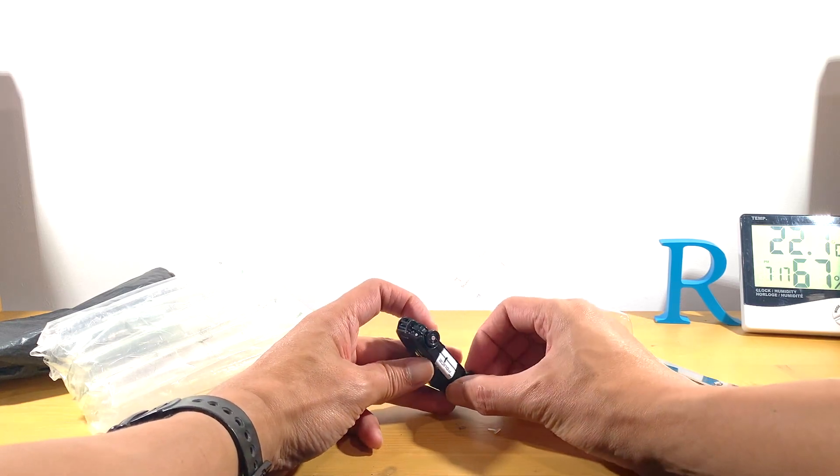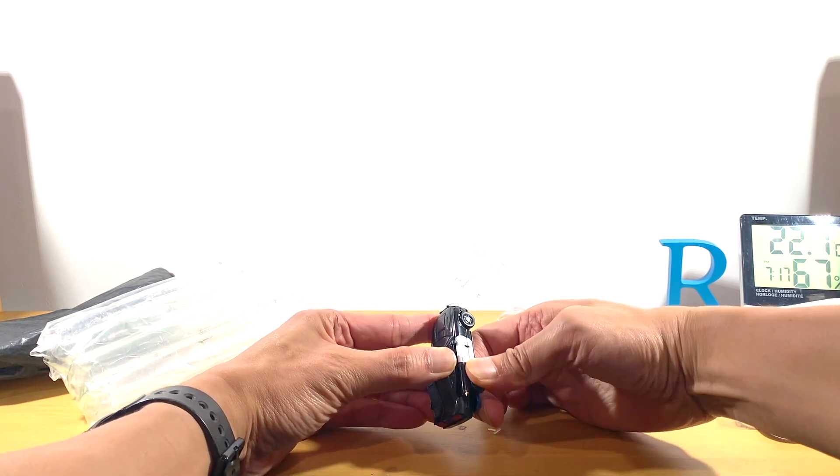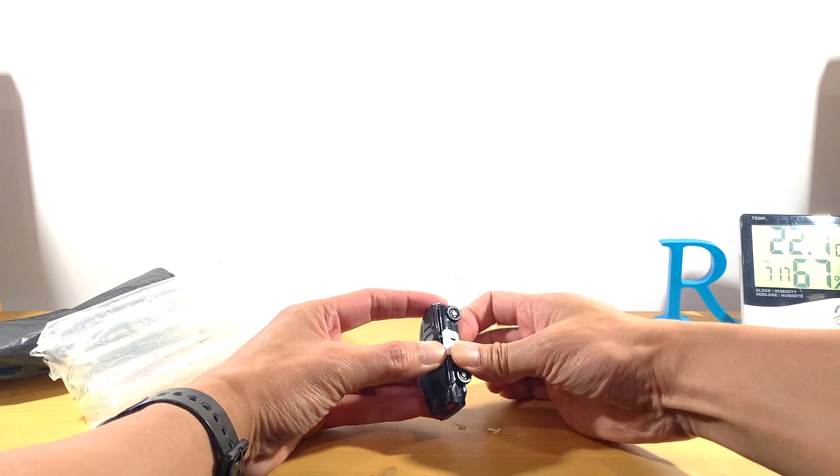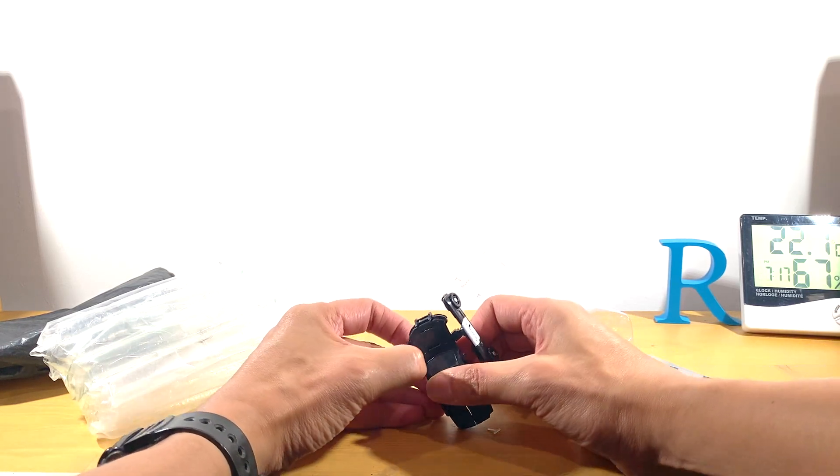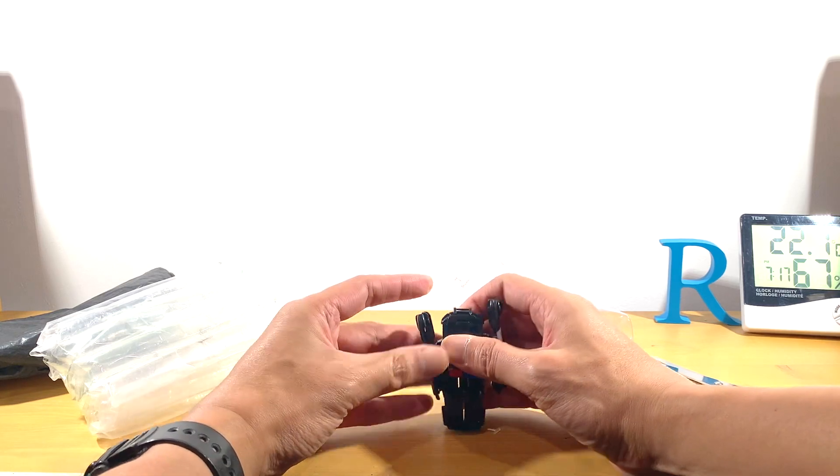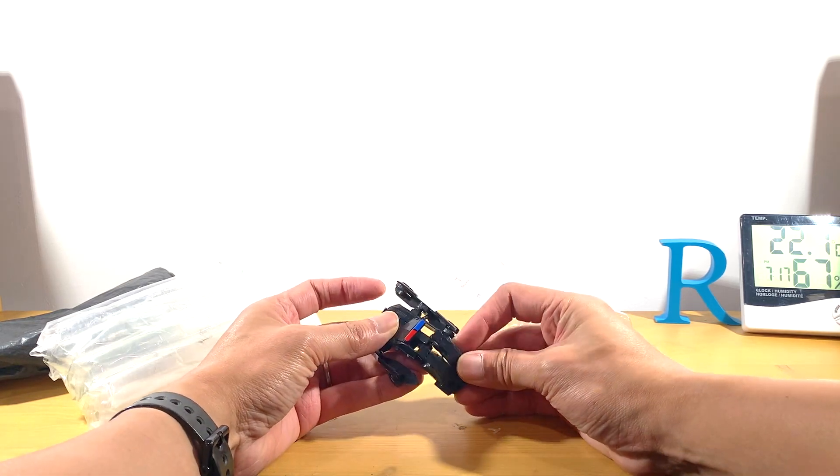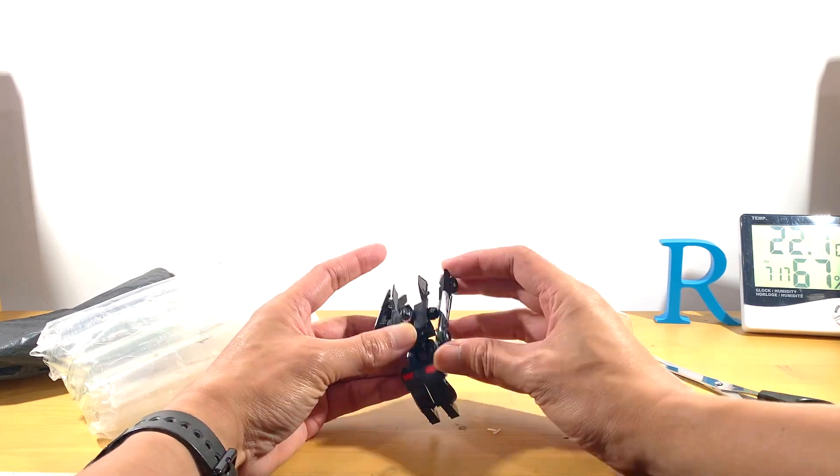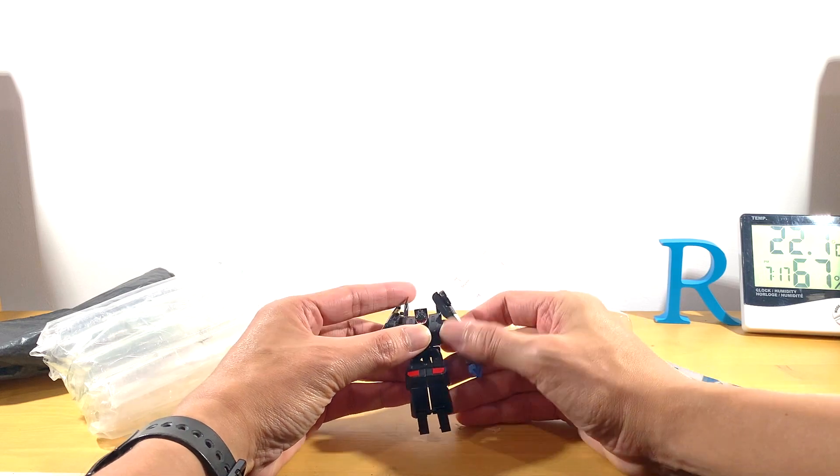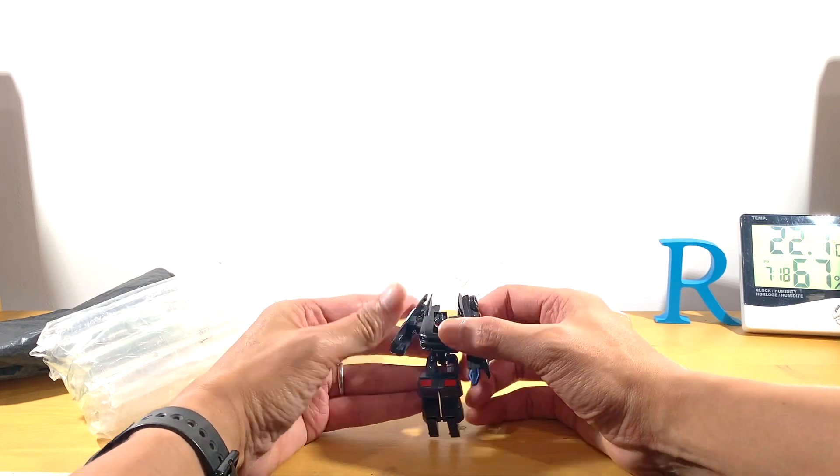So just obviously reverse the steps and - oh there it is. And then rotate his weird looking fists - they're actually flat.